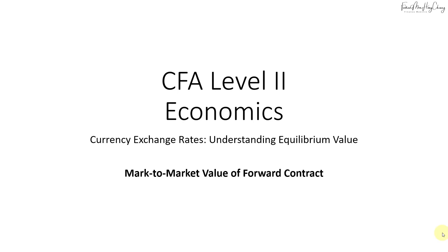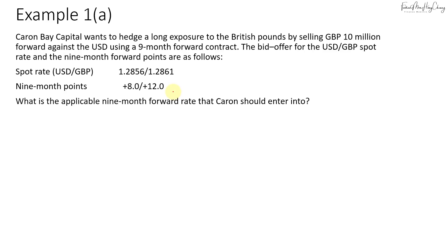Now let's look at how we calculate the mark-to-market value of a forward contract. In example 1A, we have Karen Bay Capital that wants to hedge a long exposure to the British pound by selling 10 million pounds forward against the US dollar using a nine-month forward contract. The bid-offer for the dollar-to-pound spot rate and the nine-month forward points are as follows. So what is the applicable nine-month forward rate that Karen should enter into?